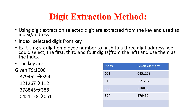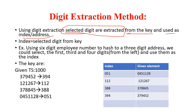Hello everyone. In this class I'll explain the digit extraction method to calculate the index of a given element. This is similar to the mid-square method, but in mid-square we square the value and extract the mid digits. In digit extraction, we only extract selected digits from the key, and those selected digits act as your index. The formula is: index = selected digits from the key.